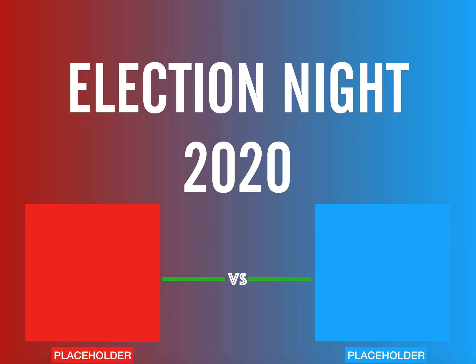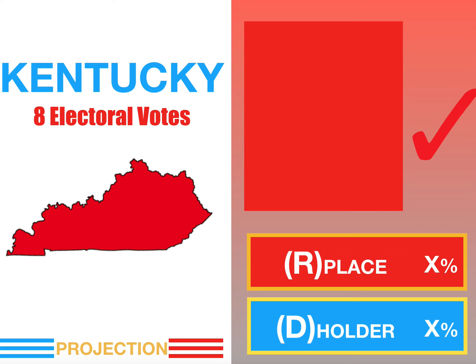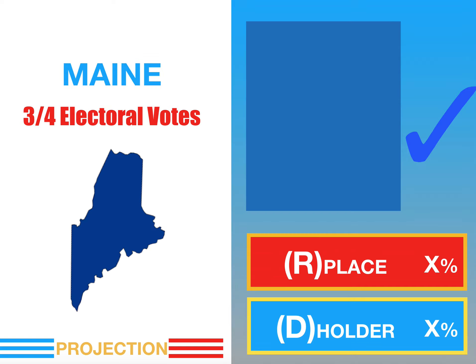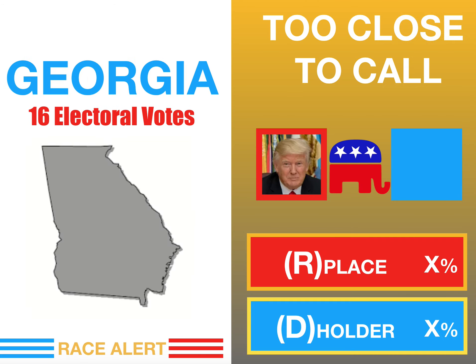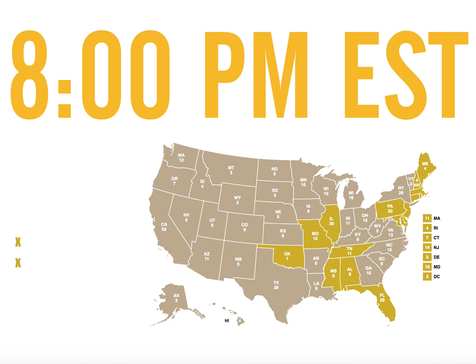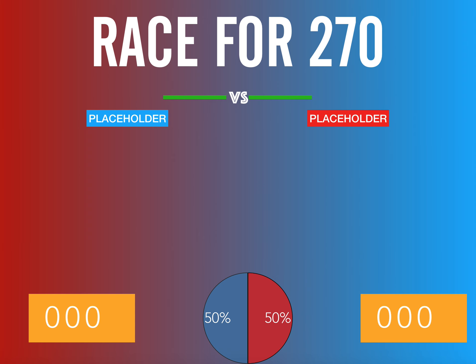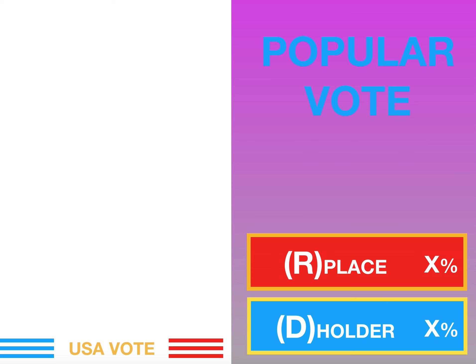This is the second format. This one is the one I used for my Hillary Clinton versus Donald Trump video. It would have projections on the side like that. States that are too close to call look like that, and then the poll closings would look like this. The race for 270 would look like this, and the popular vote count would look like this.